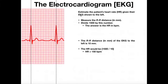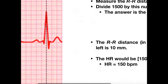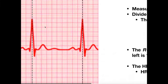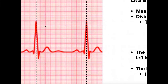Our problem is: estimate the patient's heart rate given their EKG shown here. First I have to calculate the RR distance. Let me zoom in a little bit so we can see this better. The nice thing about EKGs is they're generally recorded on paper that looks like graph paper, and each one of these squares represents one millimeter, so I just count over until I get to the next R wave.